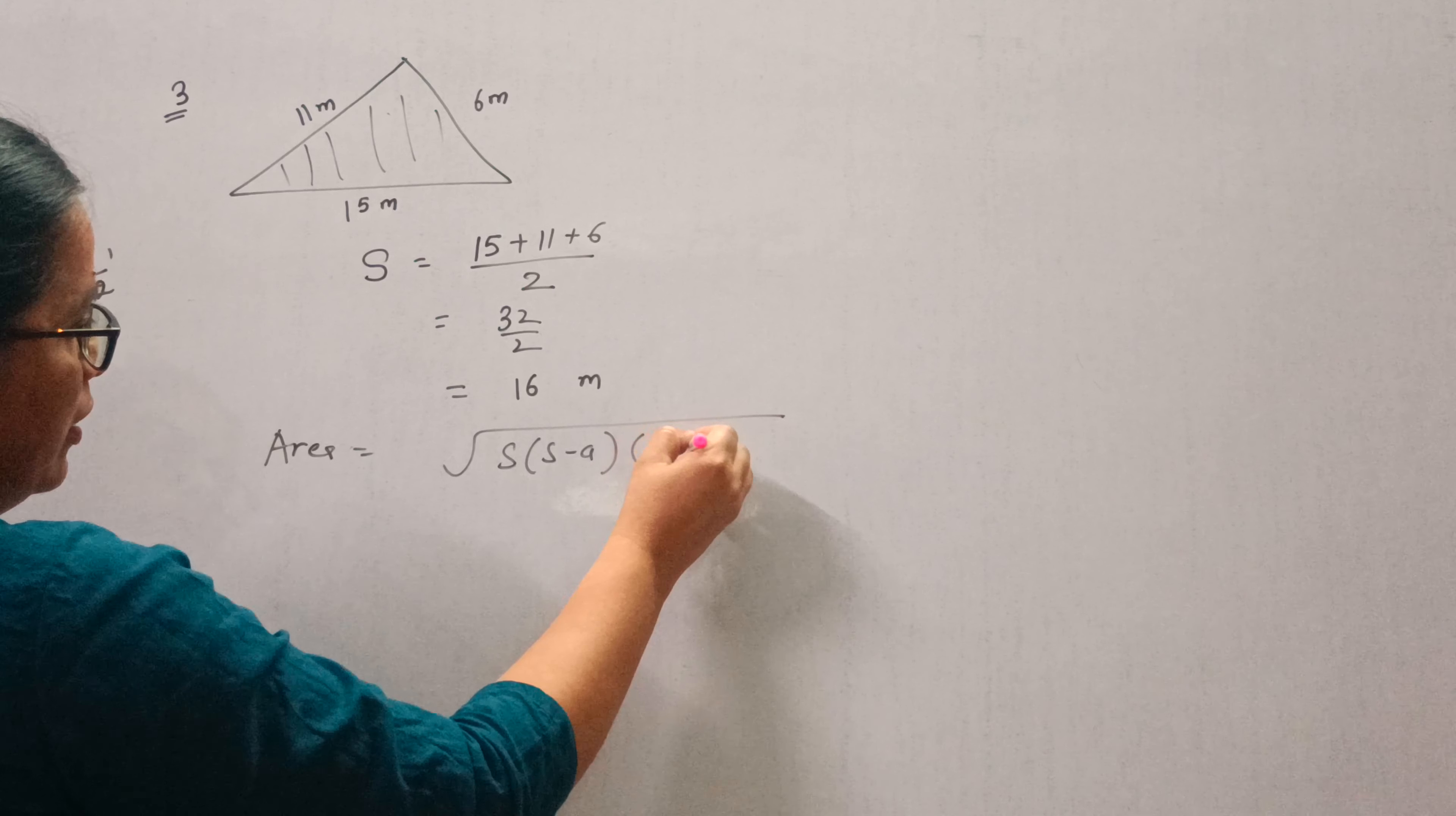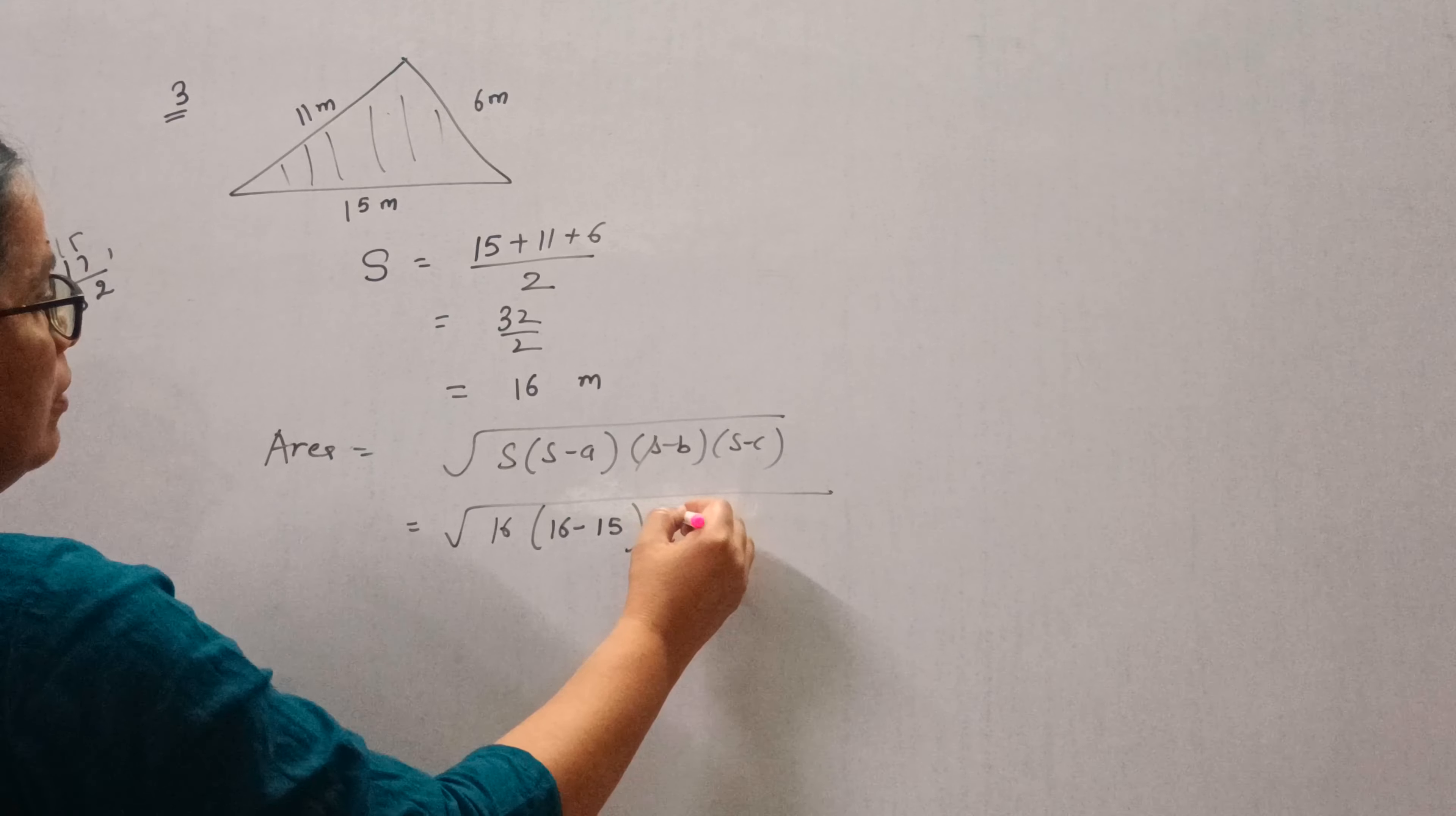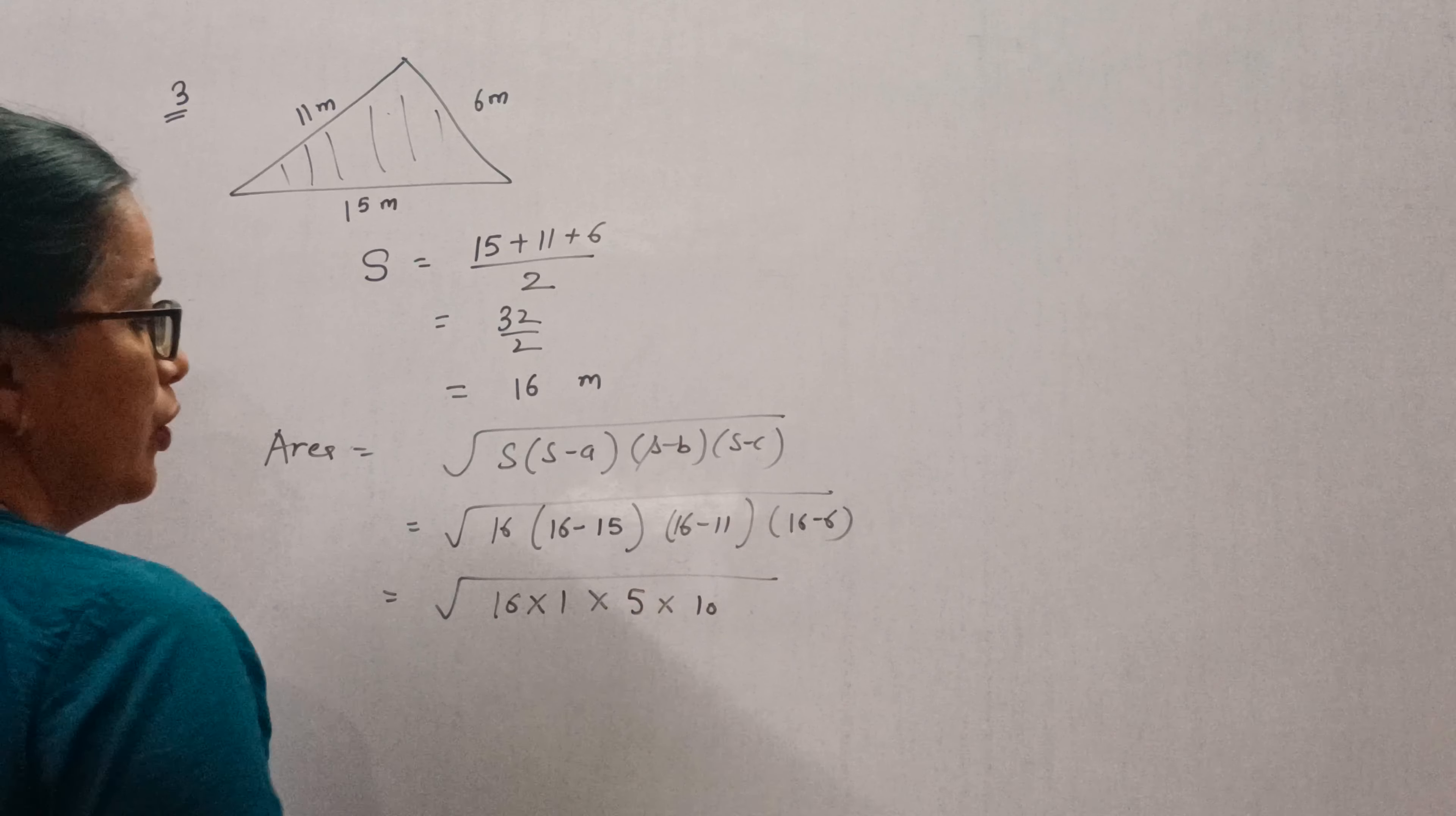S minus A, S minus B, S minus C. Here S is 16. So 16 minus 15, 16 minus 11, and 16 minus 6. So it will be 16, 1, 5 and 10.